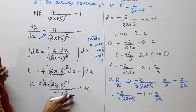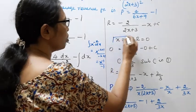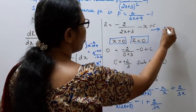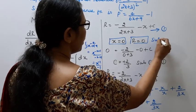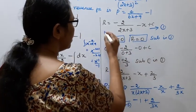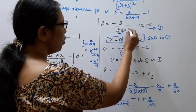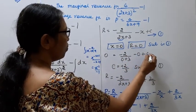When x equals 0, R equals 0. Substituting in equation 1: 0 = -2/(2×0+3) - 0 + C.